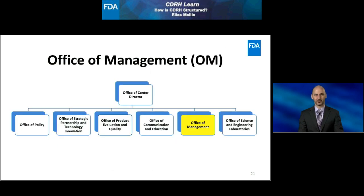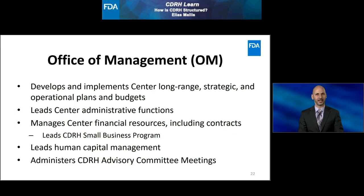Moving to the right of our diagram, we have the Office of Management, or OM. OM is largely responsible for the two key resources of CDRH: people and money. OM is the utilities that allow our home to operate. OM develops and implements the center's long-range strategic and operational plans and budgets. OM leads the CDRH administrative functions, manages the center's financial resources, and is where the CDRH Small Business Program is operated. OM leads the Human Capital Management and also administers the various CDRH Advisory Committee meetings.